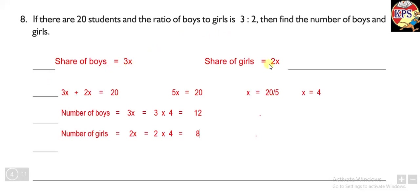To recap: the ratio of boys is 3x and the ratio of girls is 2x. So 3x plus 2x equals 20, giving 5x equals 20 and x equals 20 upon 5, so x equals 4. Putting the value of x, we get the number of boys are 12 and number of girls are 8.